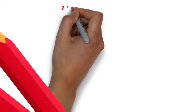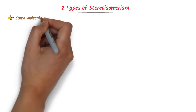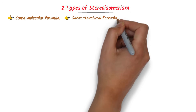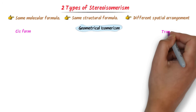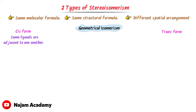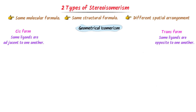Now we learn the two types of stereoisomerism. Stereoisomers have the same molecular formula and same structural formula but different spatial arrangement. The first type is geometrical isomerism. In geometrical isomerism, we write two forms: cis form and trans form. When the same ligands are adjacent to one another, it is the cis form; when the same ligands are opposite to one another, it is the trans form.